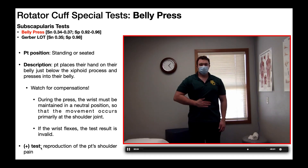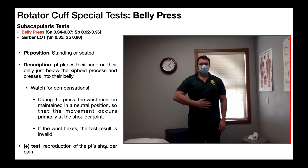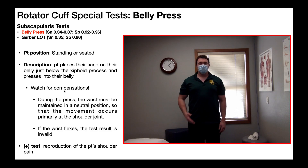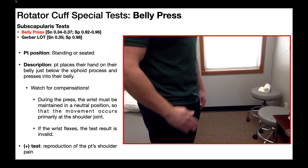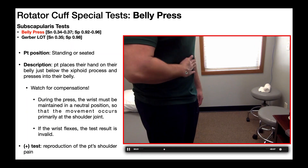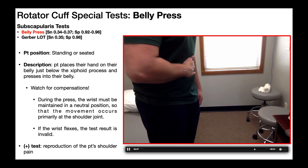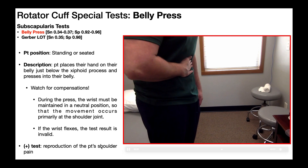A positive test is reproduction of the patient's familiar shoulder pain when they press in. Now, it looks like a fairly simple test and overall it is. However, you do need to watch for compensations. One common compensation is when they press into the belly, the wrist actually goes into flexion — if the wrist flexes, the test results are no longer valid. The wrist needs to be maintained in a neutral position, so that when pressing in, the movement is localized pretty much just to the shoulder joint.